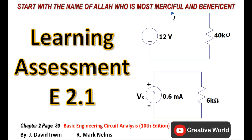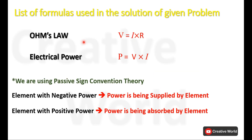Welcome to Creative World. From this video onward we are starting Chapter 2, and in this video we will be solving Learning Assessment 2.1. While solving this problem we will be using Ohm's Law. The basic equation of Ohm's Law is V equal to I multiplied by R, where V is voltage, I is current, and R is resistance.